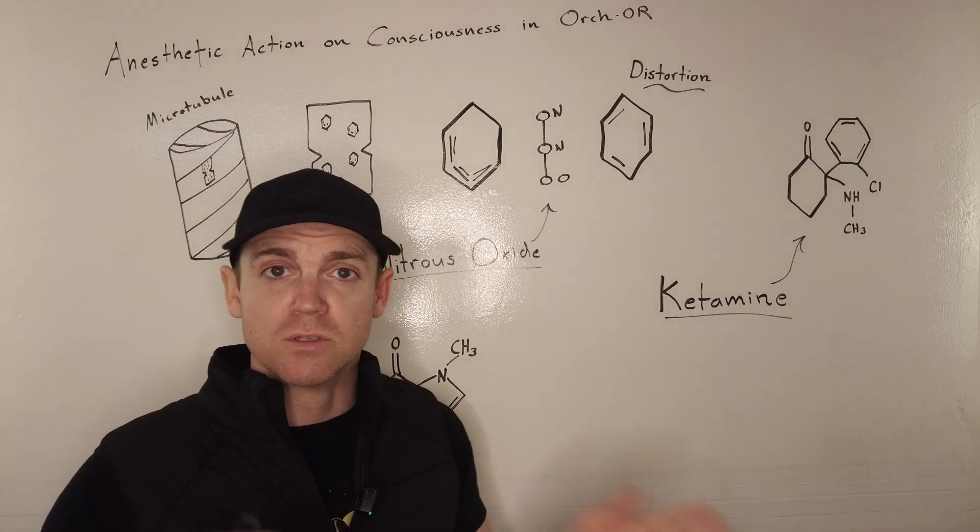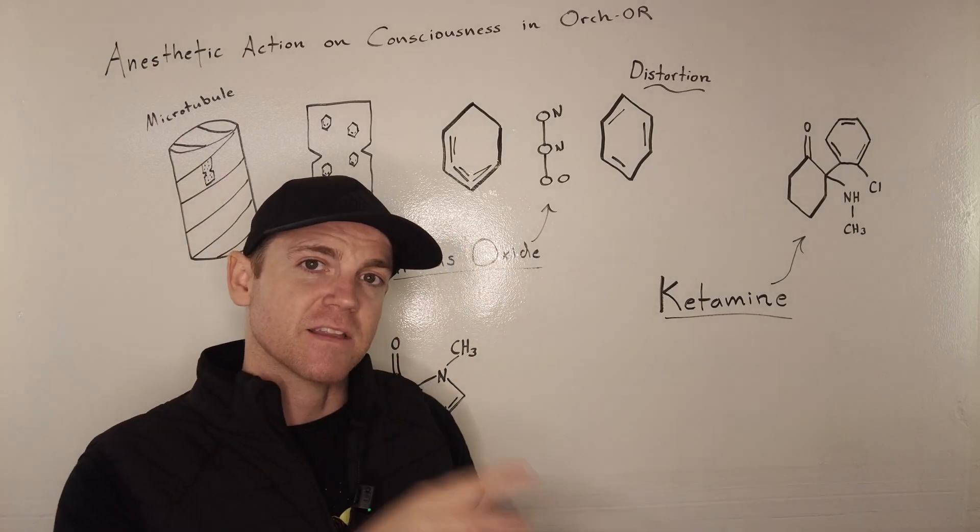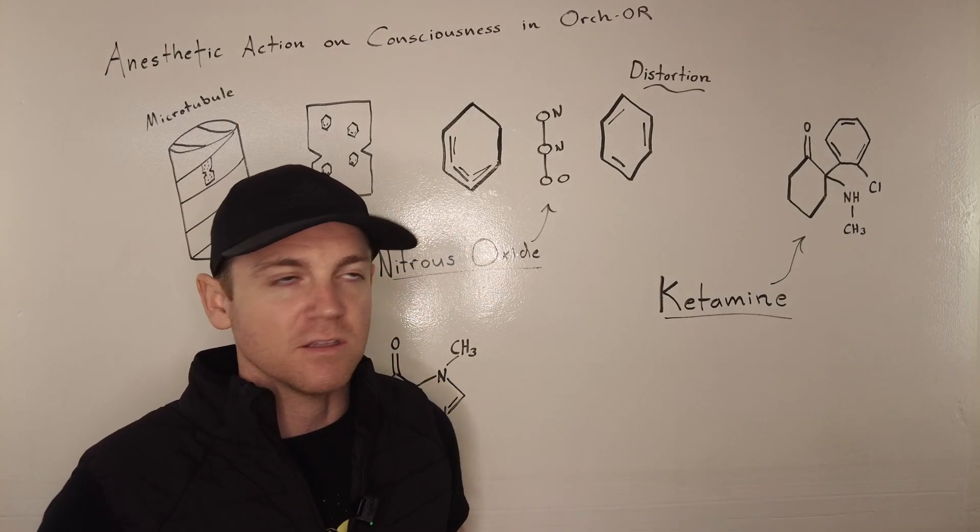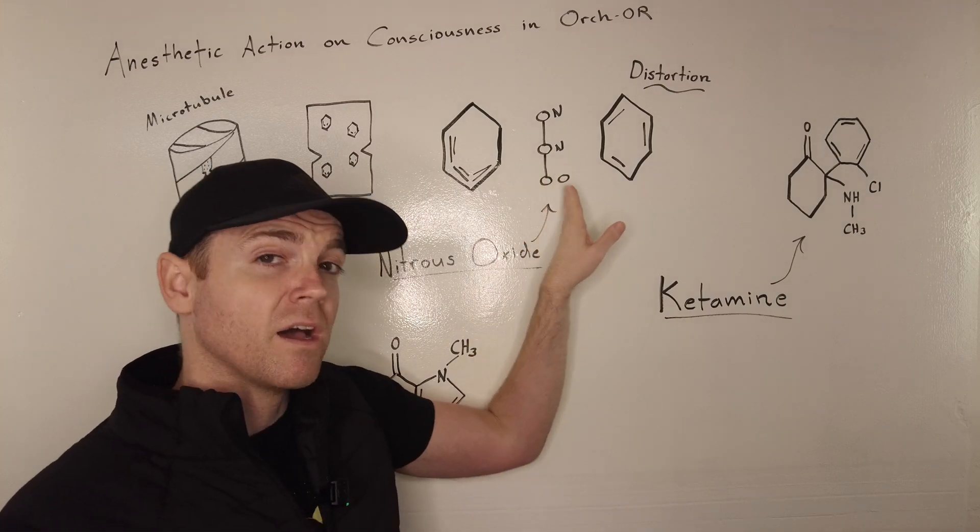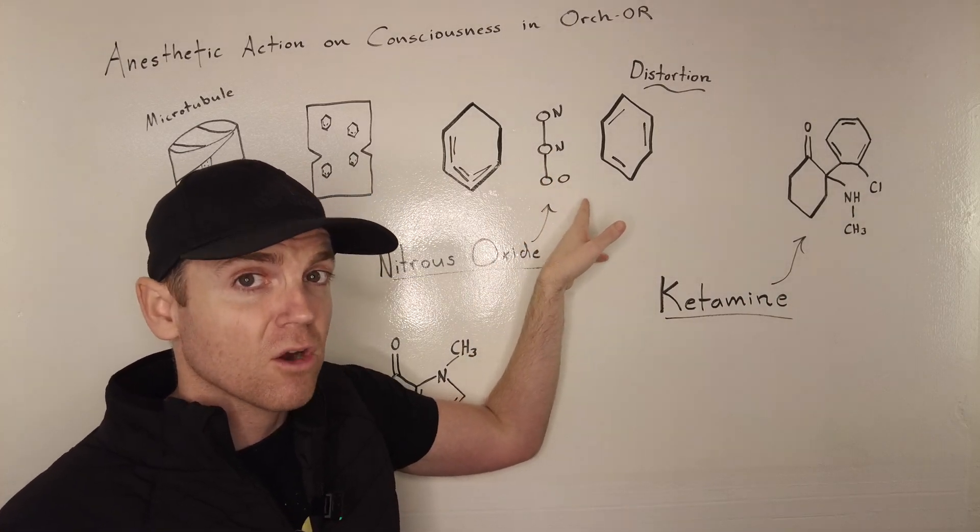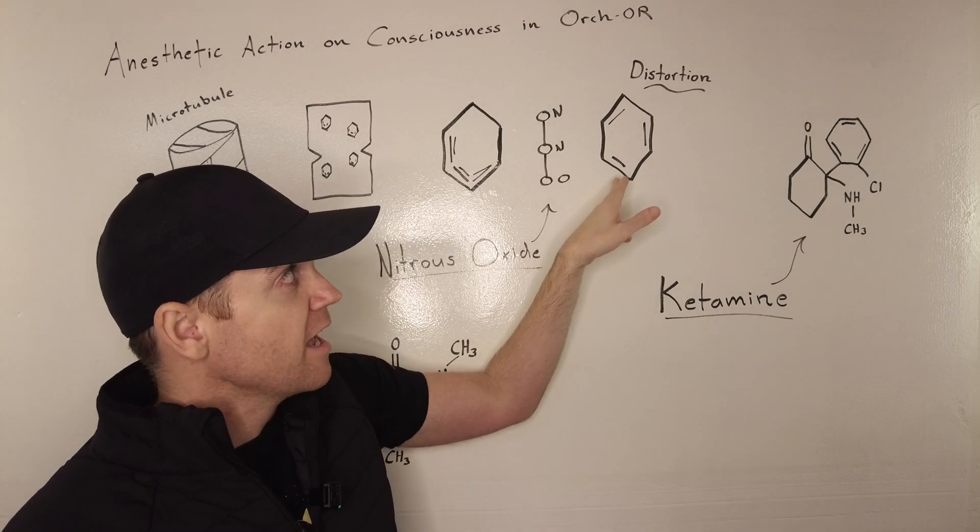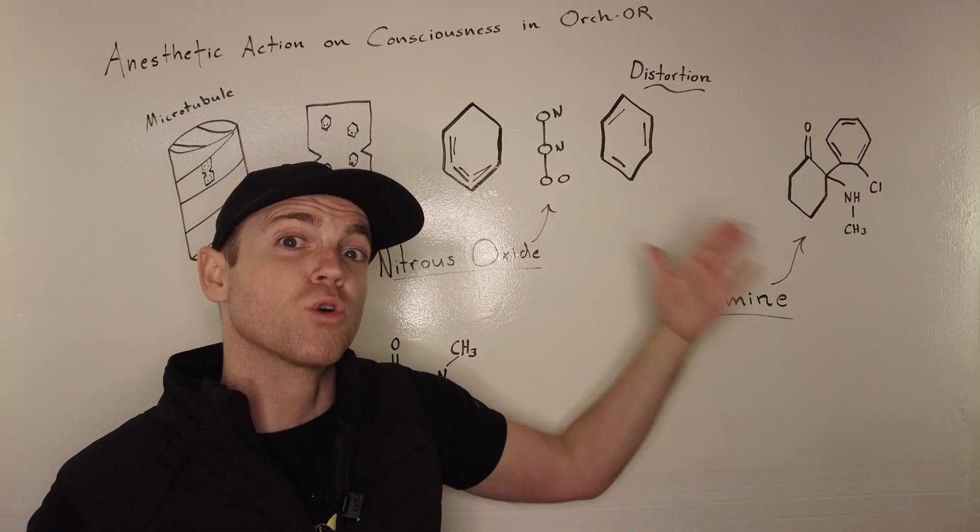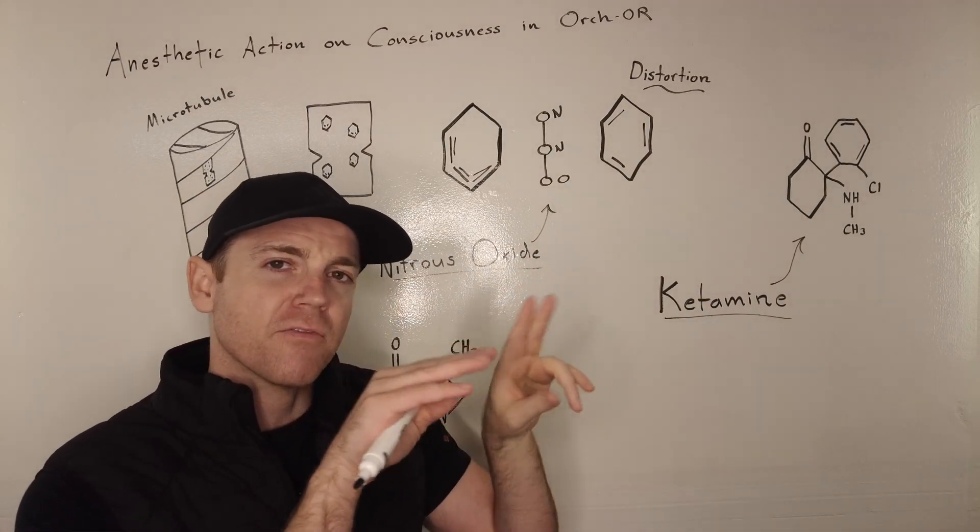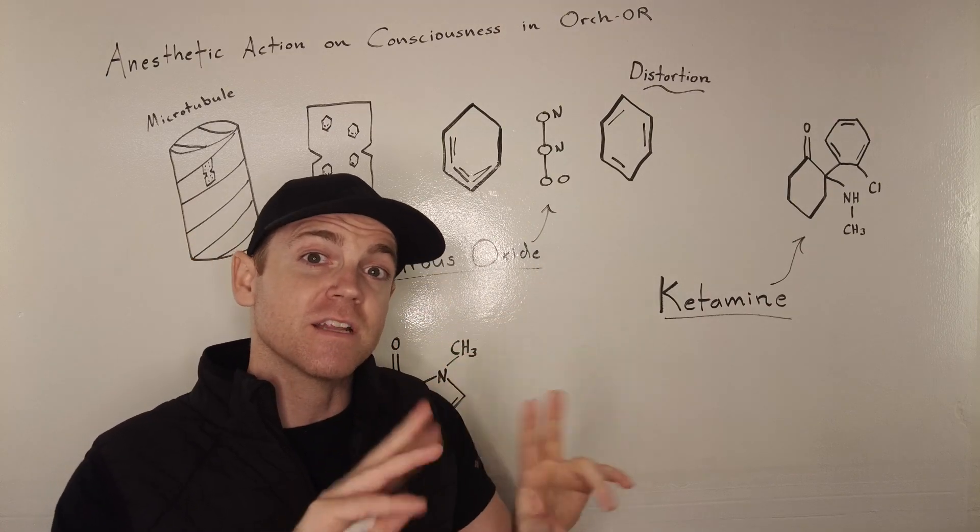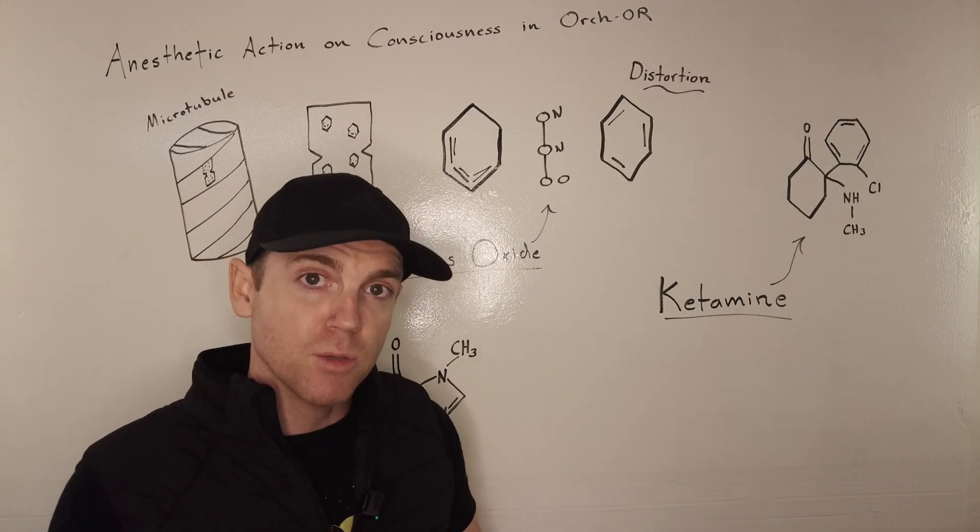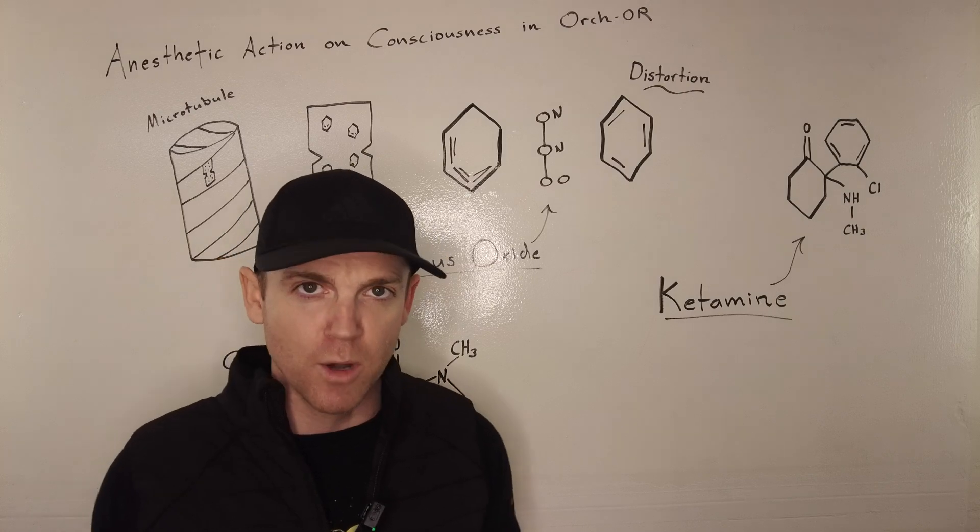That's why these microtubules are so kind of stacked. They have these pi stacks is what they're called. So if you put nitrous oxide, you actually are able to interfere with van der Waals forces, and you basically get some form of distortion. You can knock off, knock out, the synchronicity of microtubules as they oscillate throughout the brain.